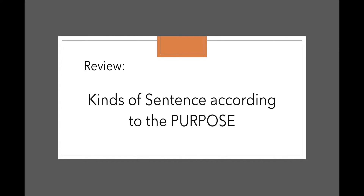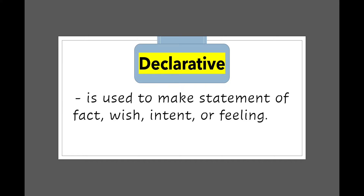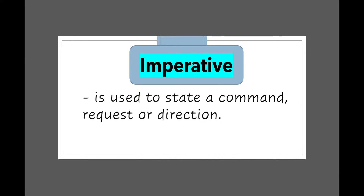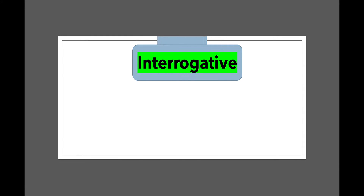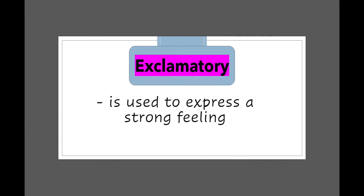Before we go further in our lesson, let us review your English subject. A declarative sentence is used to make a statement of fact, wish, intent, or feeling — for example, 'I will create a great painting this weekend.' An imperative sentence is used to state a command, request, or direction — for example, 'Write your name on a sheet of paper.' An interrogative sentence is used to ask a question — for example, 'Did you do your homework?' An exclamatory sentence is used to express a strong feeling — for example, 'Stop talking!'